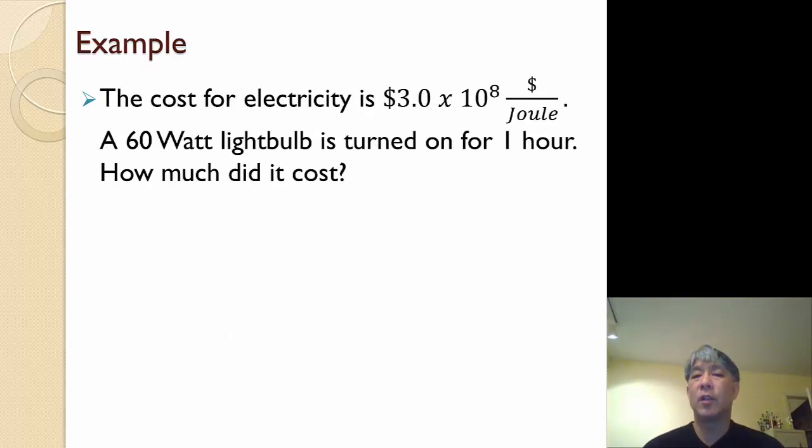For example, the cost for electricity is 3 times 10 to the minus 8 dollars per joule. A 60 watt light bulb is turned on for 1 hour. How much did it cost?